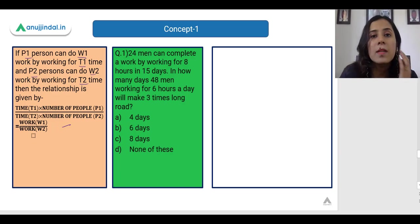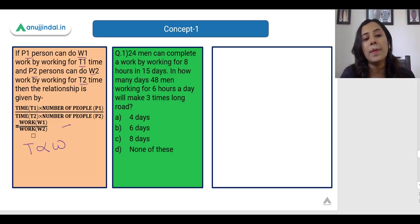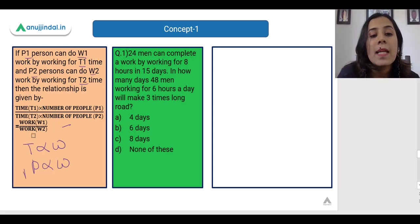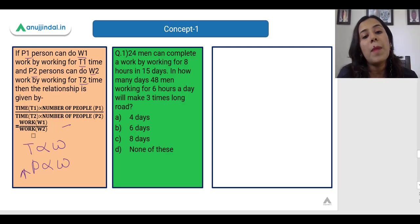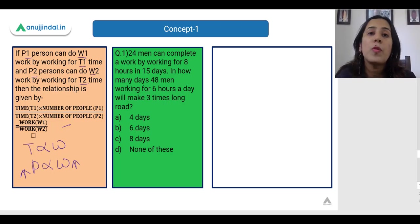The time taken is directly proportional to the work done — the more time a person works, the more work they complete. Similarly, the number of people working is also directly proportional to the work done. If you increase the number of people, the work done also increases. So time and number of people are both directly proportional to the amount of work done.